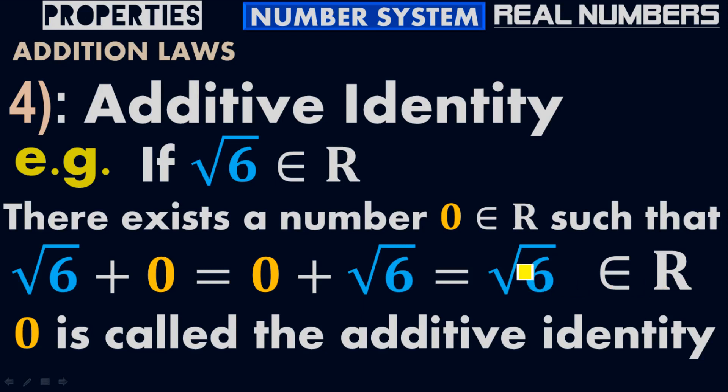Therefore, 0 is called the additive identity, not √6. 0 is the additive identity.